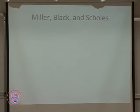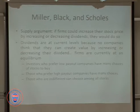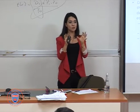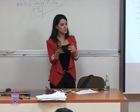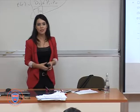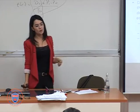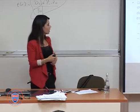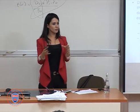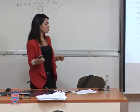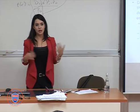Miller, Black, and Scholes also support the dividends-are-irrelevant theory, looking at the supply side. They say if firms could increase their stock price by changing dividend levels, they would do so all the time. But we don't see that. Why? Because changing dividend policy doesn't affect the value of the firm that much. There are different firms with different payout ratios — there's demand and supply, and investors who prefer certain types of firms. So it's an equilibrium. Dividend policies are irrelevant.